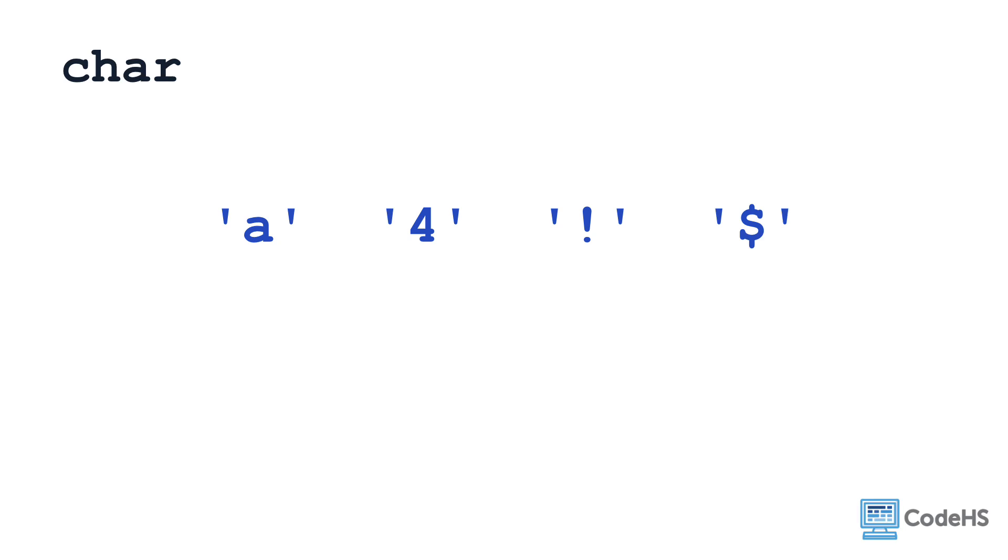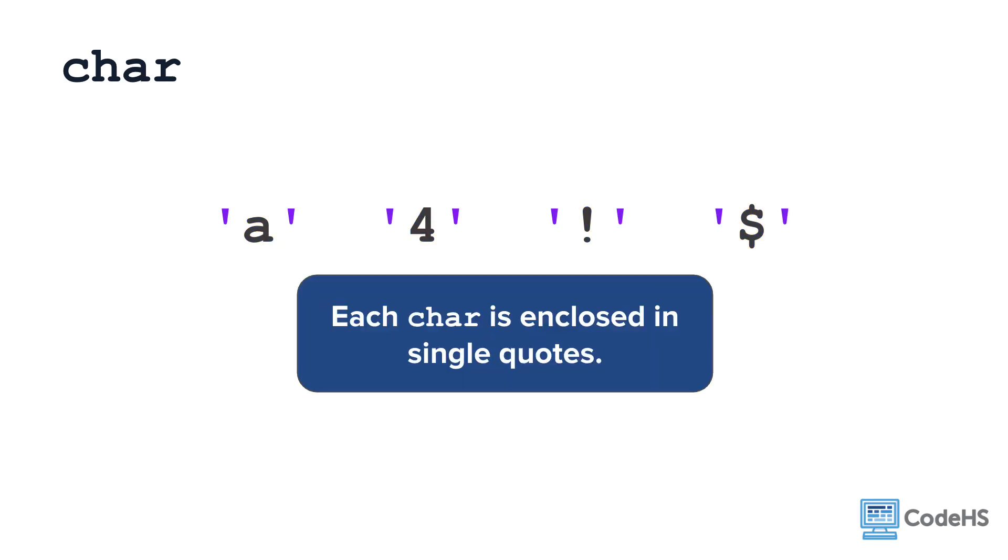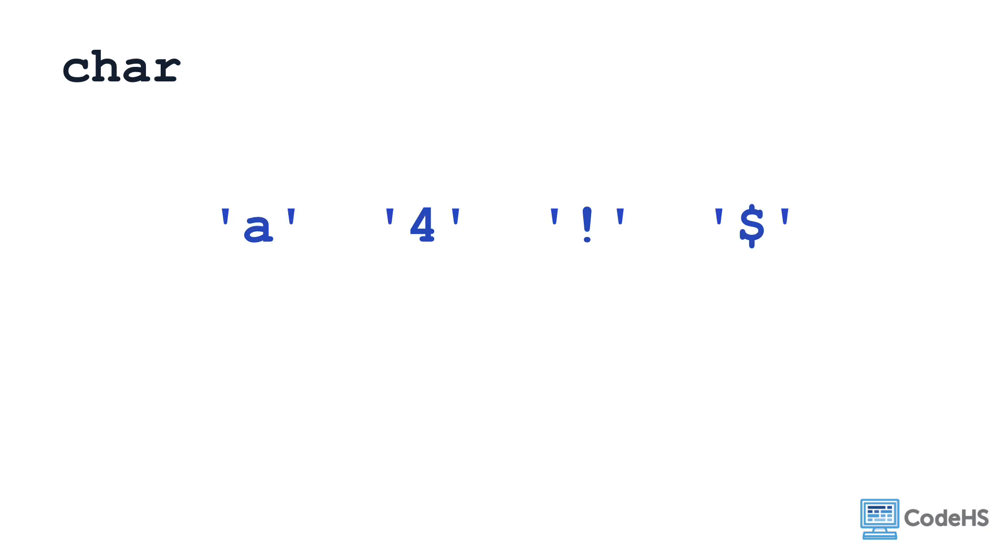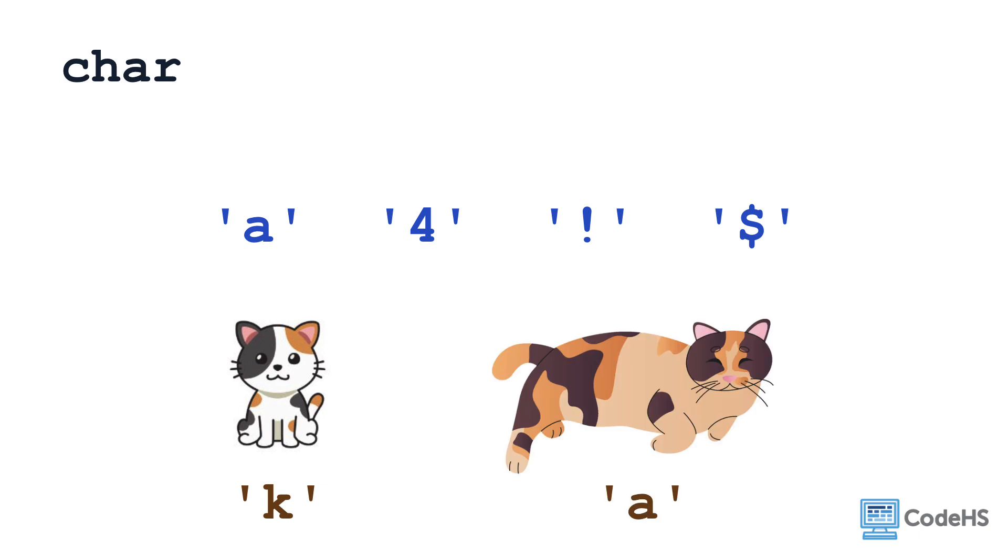The char data type stores a single character. This can be a letter, number, punctuation mark, or symbol. Note that each char is enclosed in single quotes. As an example, you would use the char data type to store the letter K to designate a cat as a kitten, or the letter A to designate a cat as an adult.